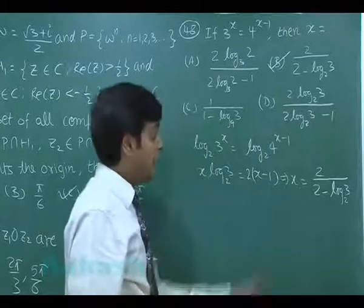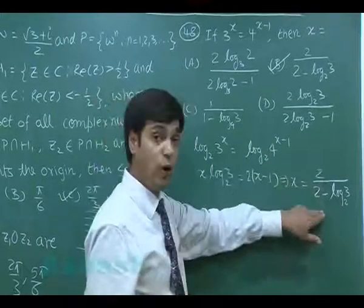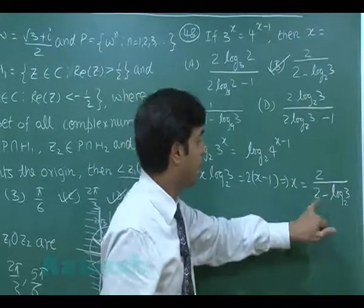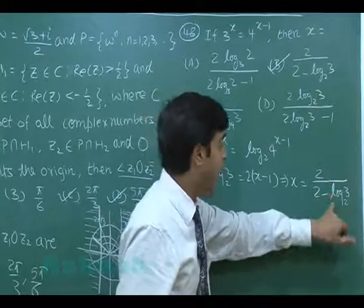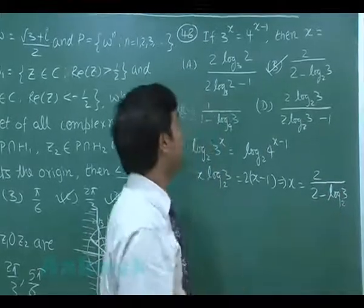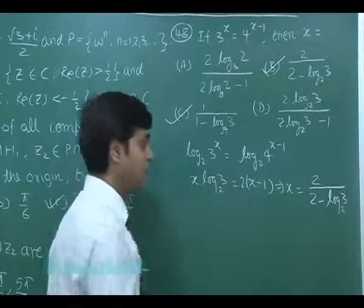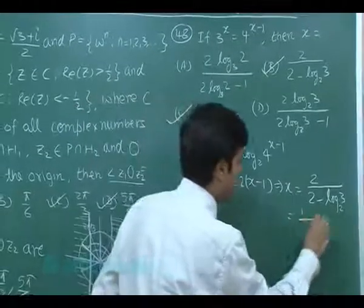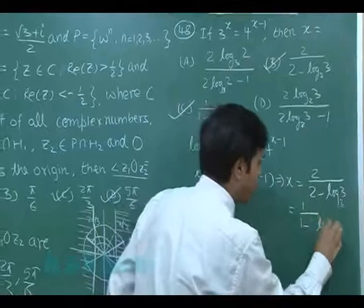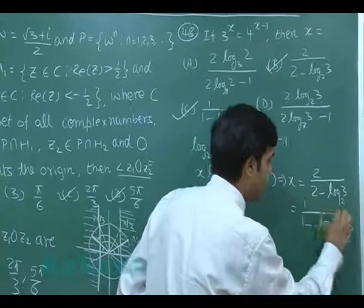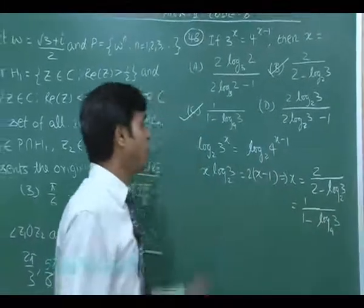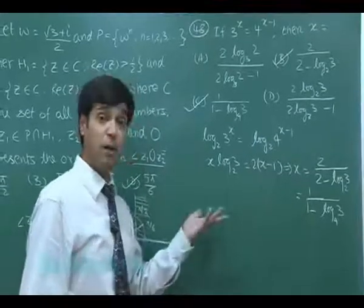If I divide both numerator and denominator by 2, it will become 1 upon 1 minus half log 3 to the base 2, which can be written to the base 4. This can also be considered 1 upon 1 minus log 3 to the base 4.